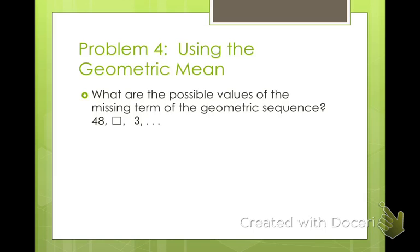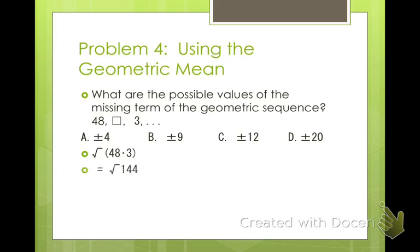Last but not least, the geometric mean. To find the geometric mean, we take x and y, multiply them together, and take the square root. What's the geometric mean between 48 and 3? We take 48 times 3 = 144, and the square root of 144 is 12, so the correct answer is C. Both positive and negative 12 would fit, since multiplying by positive or negative one-fourth works.